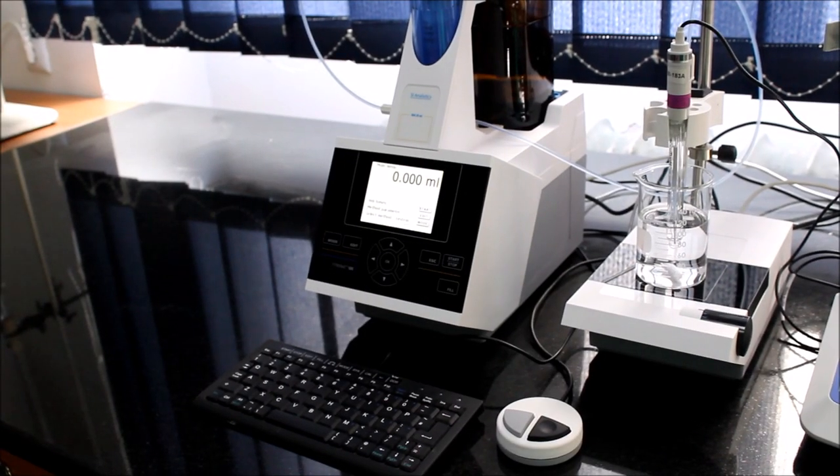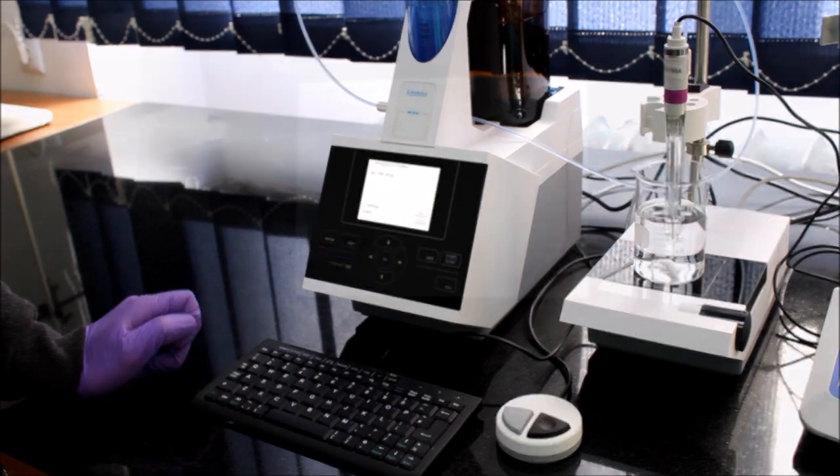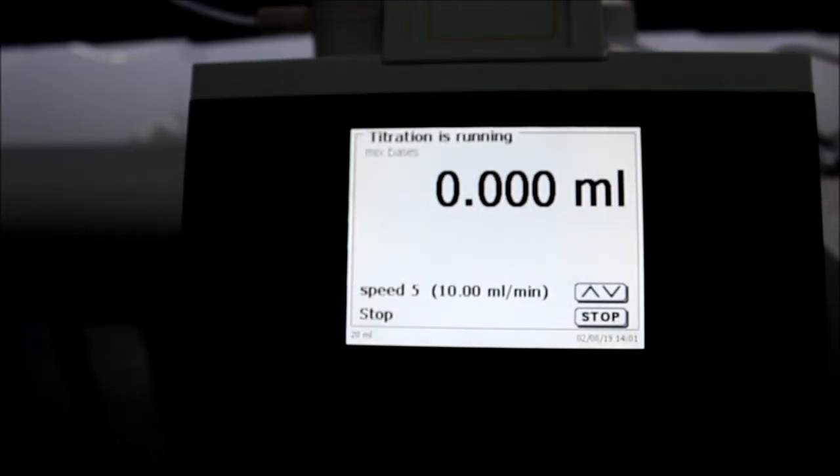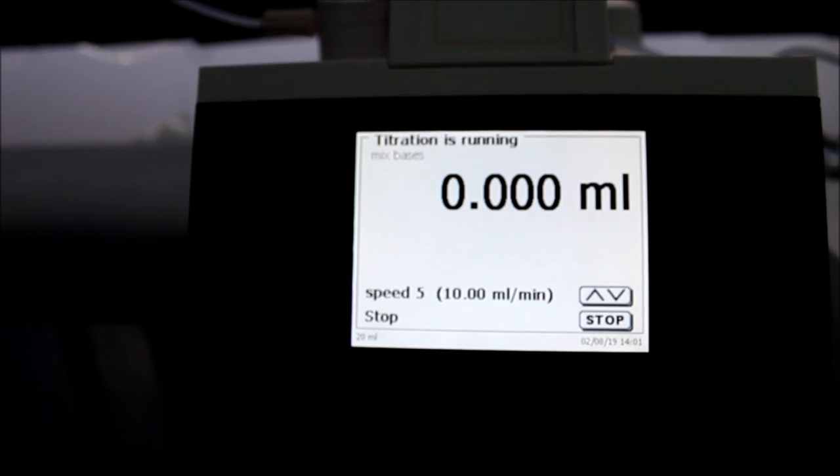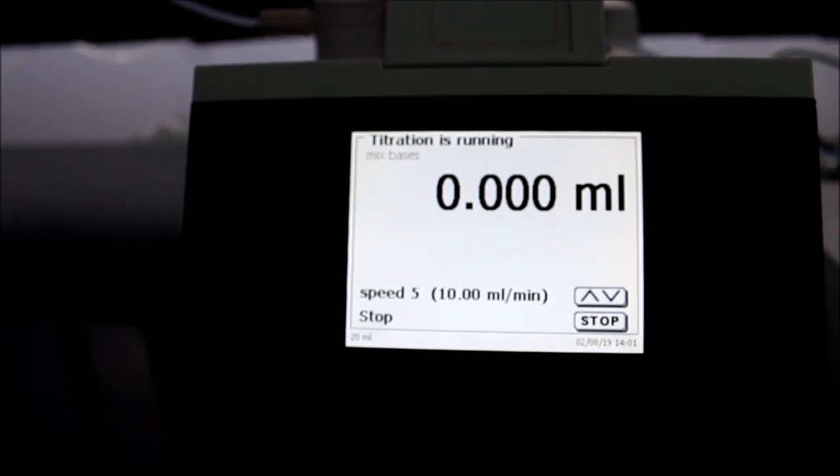To start the titration press the F1 button and then press enter twice to agree on the settings of titration. Now titration is running so you can start the titration process.